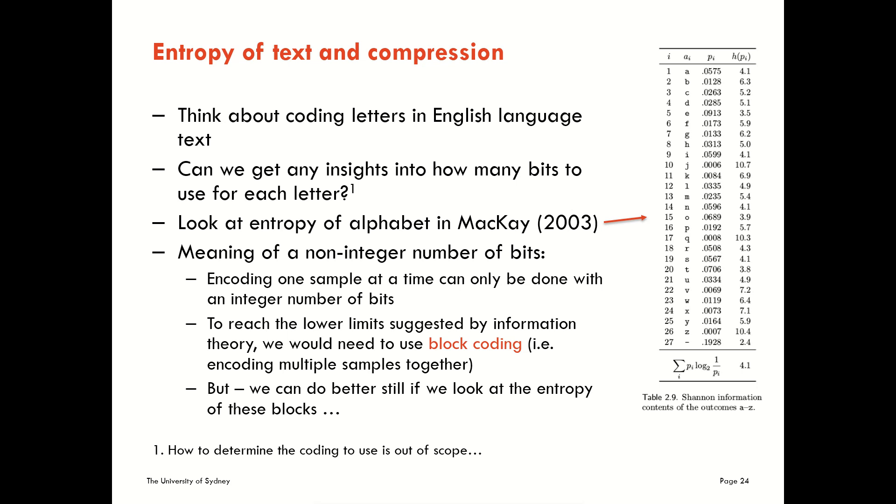Importantly, we can still do better if we look at the entropy of these blocks. So if instead of, you know, say we've got the sequence of A, B, and C, and we think of a code across those, what we can do is actually look at the probability of getting those doubles or triplets together. And that will allow us to do something more efficient again. And that's what we'll look at in our next little short video vignette.